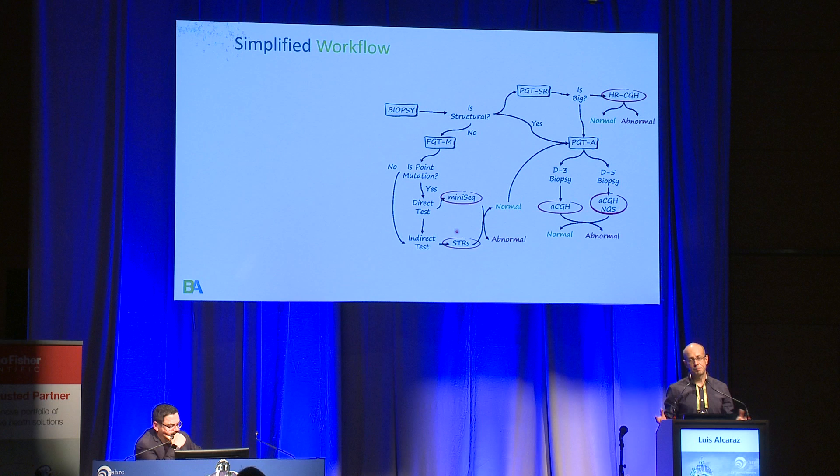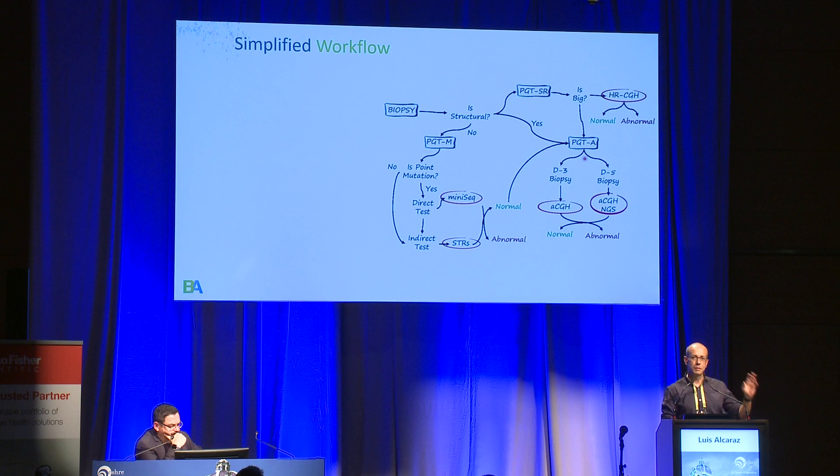The situation was even worse if we wanted to do the analysis of monogenic disorders, because we were using a combination — as many labs are doing right now — between mini-sequencing, which is Sanger sequencing, and fragment analysis by STRs. With this protocol, it was even more difficult if we wanted to combine both things, because the protocols were completely different — even the first step, the amplification of the DNA, was completely different.